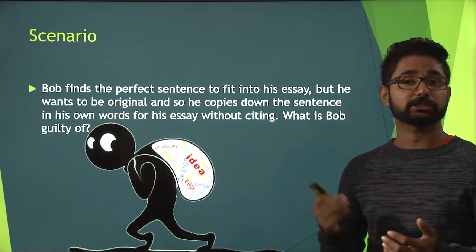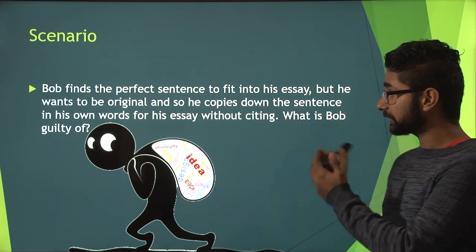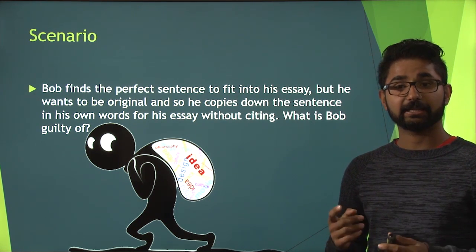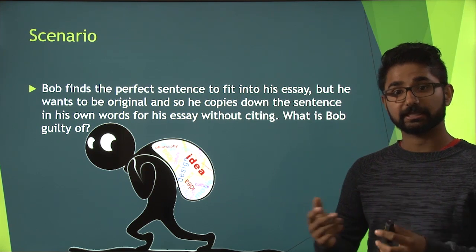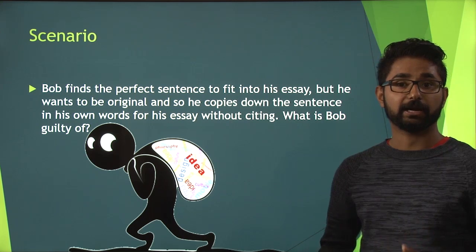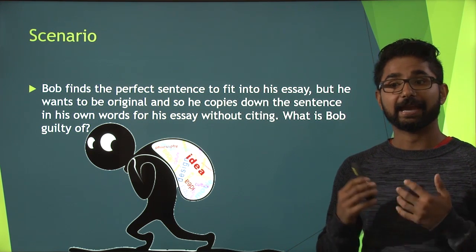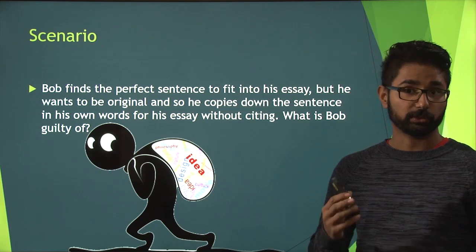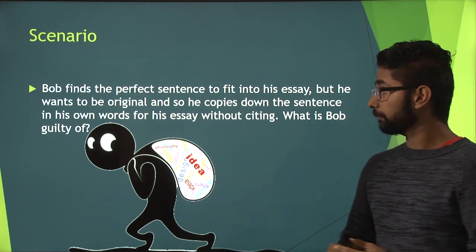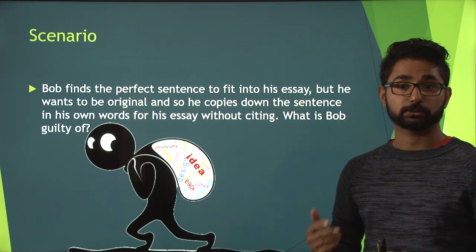What kinds of consequences might Bob face? Well, for something like this, because it is only a single sentence and if it were Bob's first time performing plagiarism, he would likely get some form of a written reprimand and possibly a referral to the Academic Integrity Mentorship workshop. And if the professor found that Bob had done this more than once on the same essay, he may also get a score of zero.